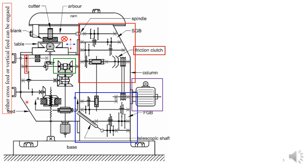There is an arrangement by which either the cross feed or the vertical feed can be engaged. This is a sliding gear. If you slide it towards the left hand side, the cross feed would be engaged. If you slide it towards the right hand side, this gear meshes with the sliding gear and then the vertical feed would be engaged. This larger gear is loosely mounted on the shaft, so if the shaft rotates, this particular gear does not rotate. This gear enables connecting the shaft to the particular lead screw for transverse motion.